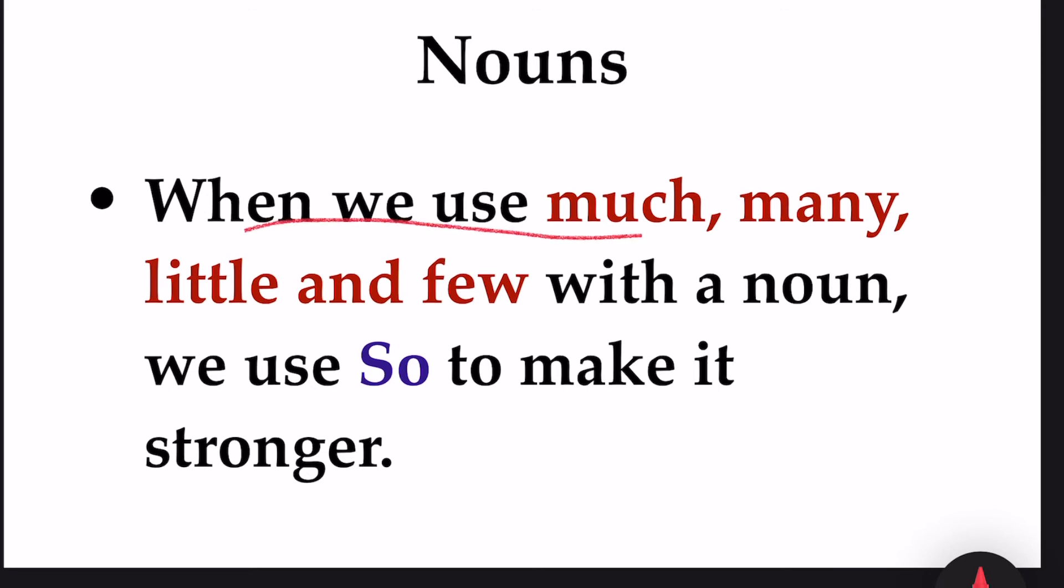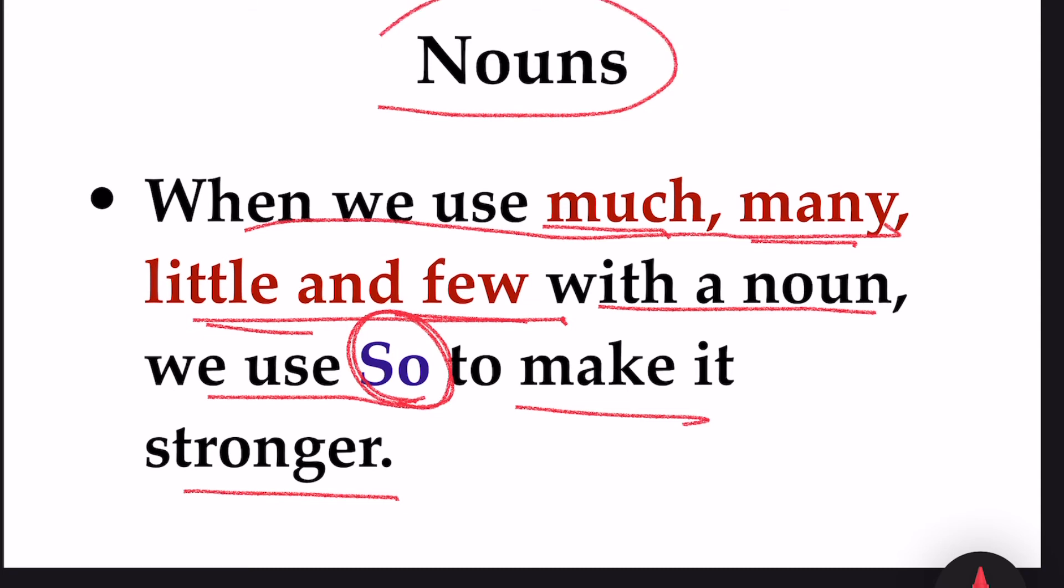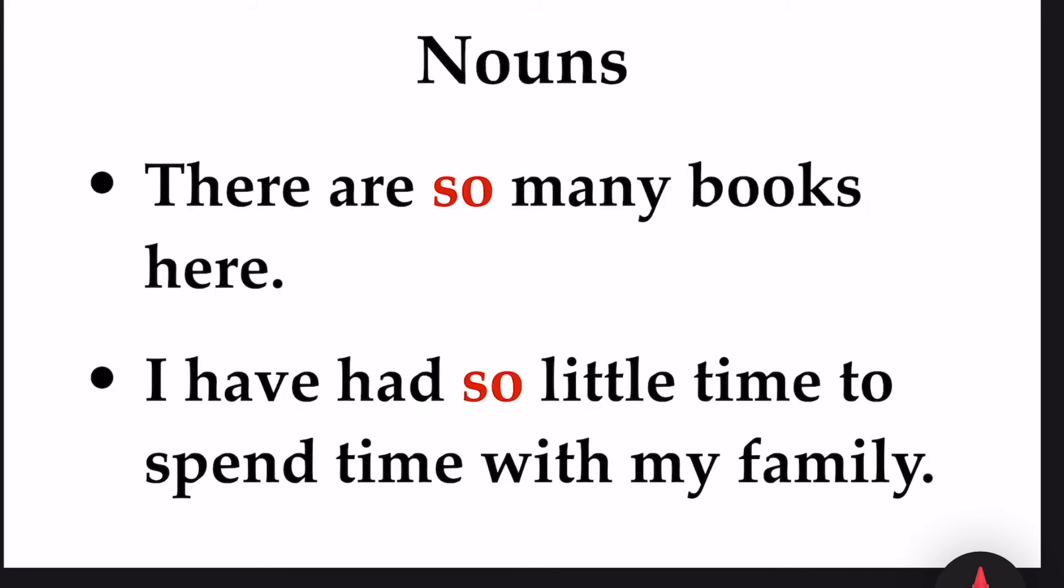But when we use much, many, little and few with a noun, we use so to make it stronger. But usually, with noun, we use such. But if we use much, many, little and few with a noun, we have to use the word so. Example, there are so many books here. I have had so little time to spend time with my family.